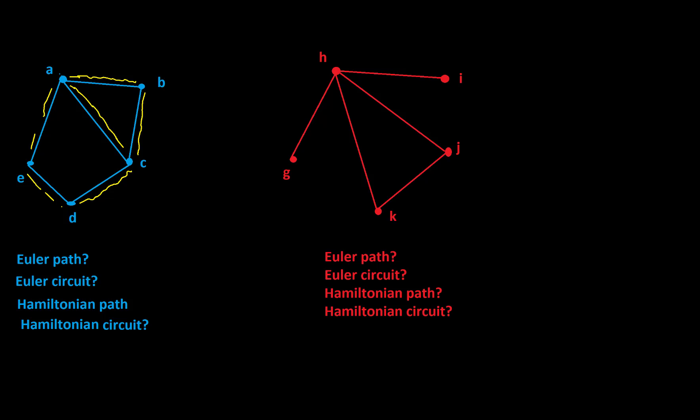So if I wanted to describe the Euler path, I would say I started at A, then I went to B, then I went to C, then I went to A, then I went to E, then I went to D, and lastly I ended at C.